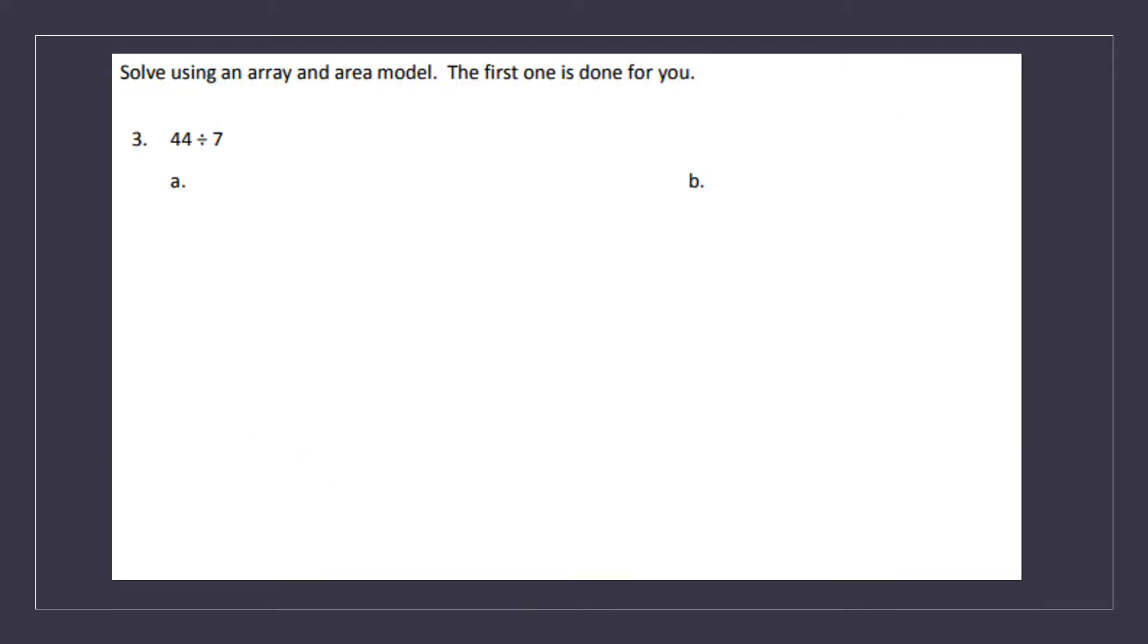Next, we are going to solve using an array and area model. The first one is done for you on your homework worksheet. So if I do my cubes, my action were to solve and they want me to solve using an array and area model. So I have two things that I need to do. So our problem is 44 divided by 7. So I know one of my groups is going to be a group of 7.